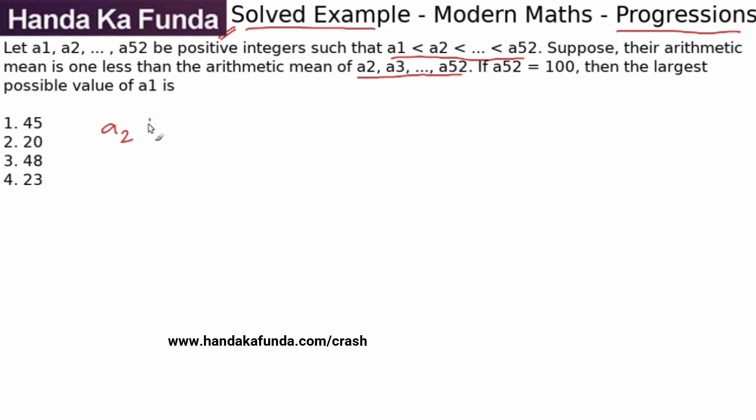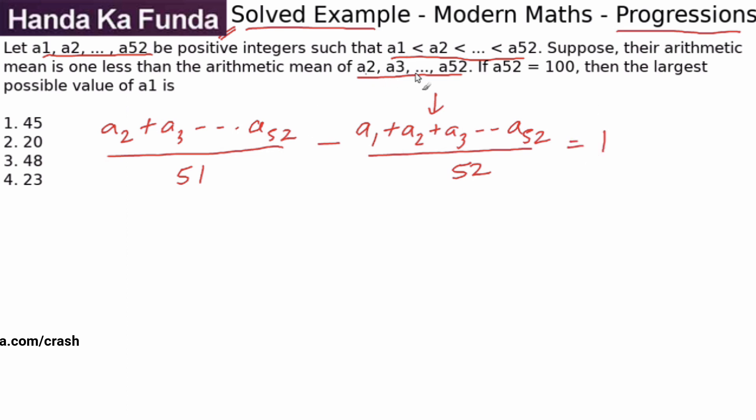So that means a2 plus a3 till a52, what will be their arithmetic mean? Sum divided by the number of terms, which is 51, minus the other one, a1 plus a2 plus a3 till a52 divided by 52. So the arithmetic mean of these values is 1 less than the arithmetic mean from a2 to a52, which is 51 terms. This is what is given to me.